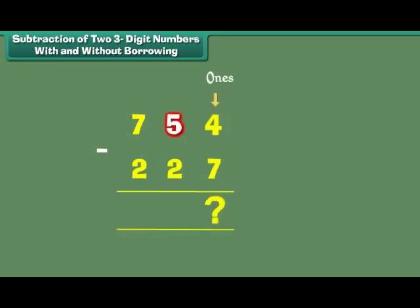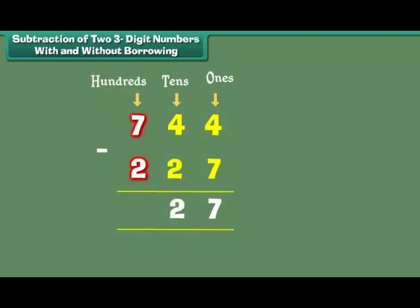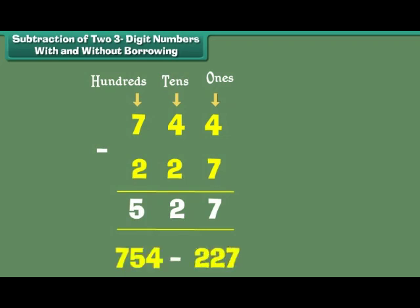What is 754 minus 227? 4 borrows from 5 and becomes 14. 14 minus 7 is equal to 7. 5 has lent 1, so it becomes 4. 4 minus 2 is equal to 2. 7 minus 2 is equal to 5. Therefore, 754 minus 227 is equal to 527.